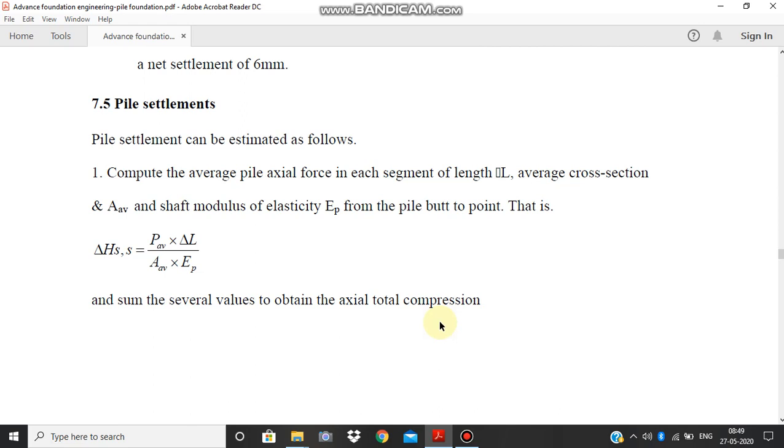There are a few steps to do that. The first step is to compute the average pile axial force in each segment of length delta L of the pile, and the average cross-section A_av, and shaft modulus of elasticity E_p from the pile butt to point. It can be given as delta H_s where delta H_s is equal to P_av into delta L upon A_av into E_p.